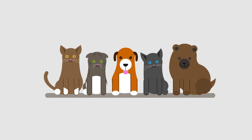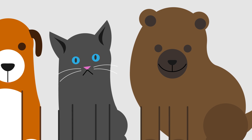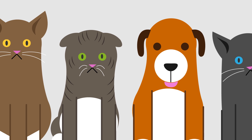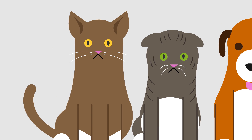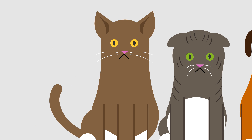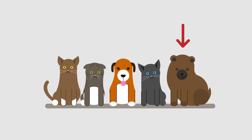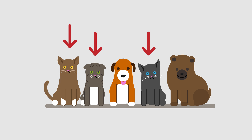Look at these cute baby animals. You will have immediately observed how cute and fluffy they are, but you will also have noticed that they are different. They vary — some are puppies and some are kittens. There is a great deal of variation between species, but also there is variation within a species. One puppy is fluffier than the other; they have different colour fur, and the kittens have different coloured eyes.